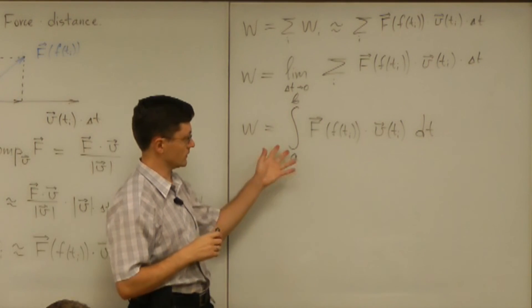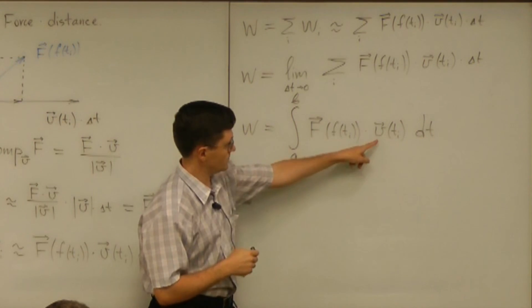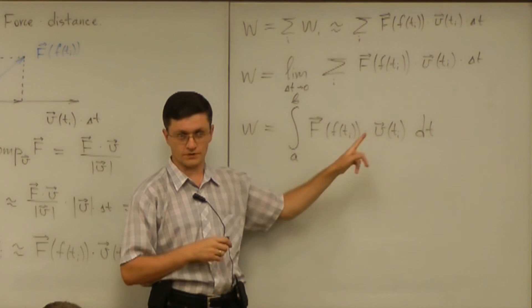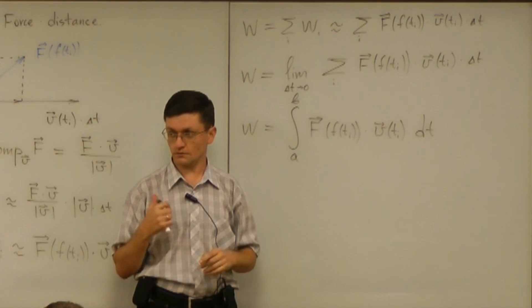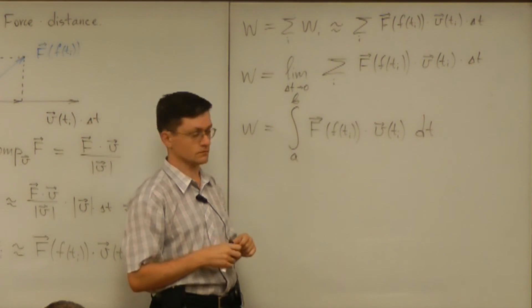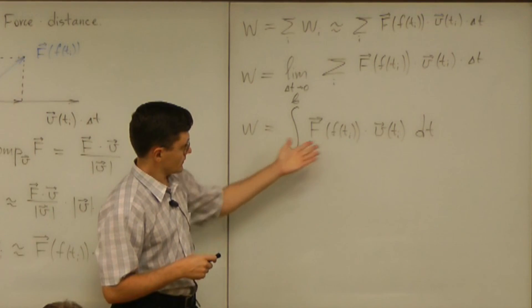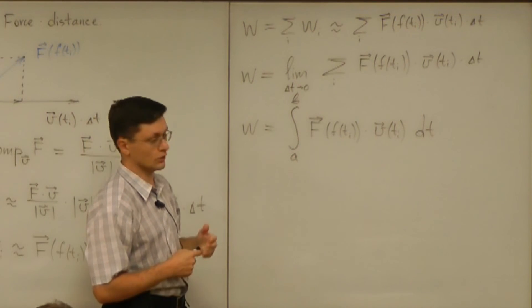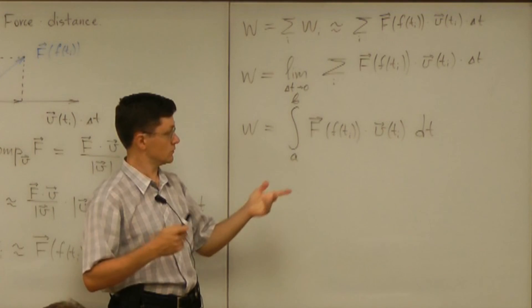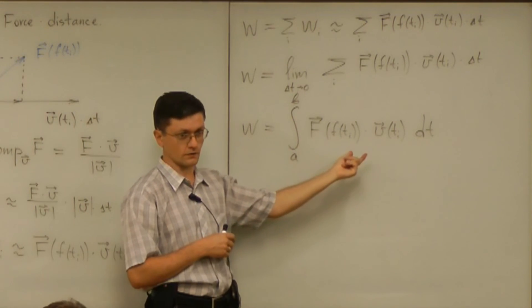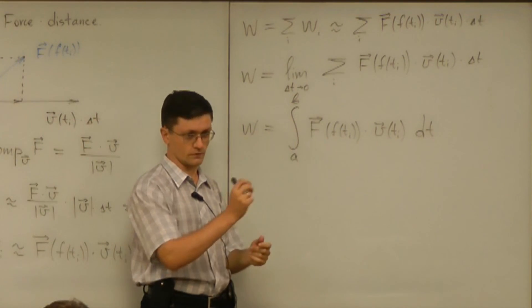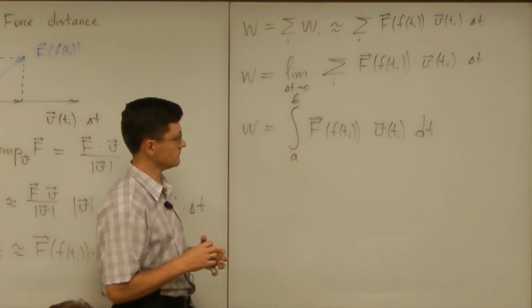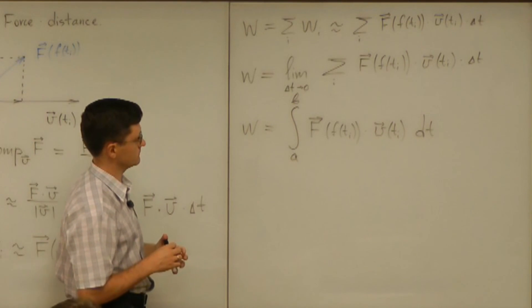So that's the final formula for the work. V is simply derivative of F of that little f. Everything here should be known at this point. Let's assume the field of forces is given and the motion is given. So that's the final formula for the work.